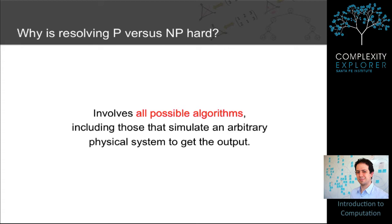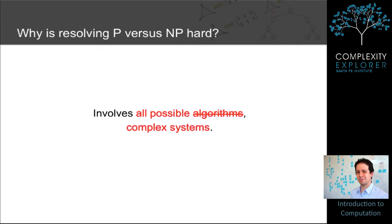But then you notice that algorithms can essentially simulate an arbitrary physical system, to get their output. So showing P not equal NP involves showing that no physical system can solve an NP-complete problem in polynomial time, including complex systems.